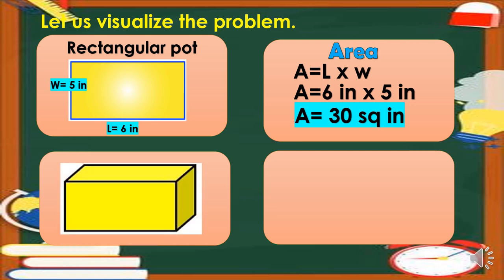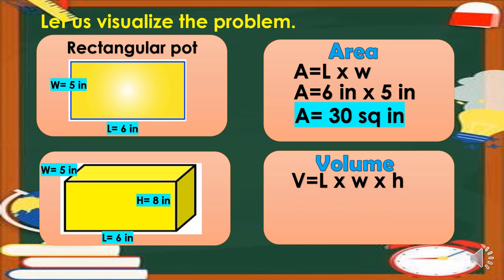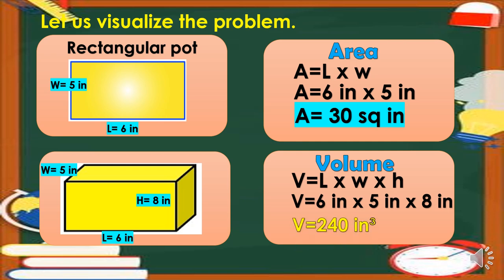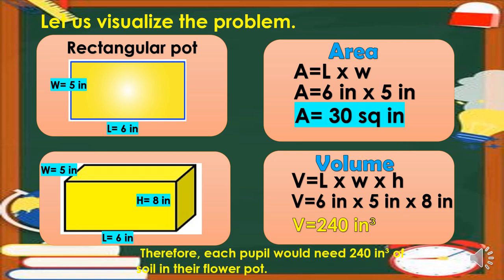Since we are filling the rectangular pot with soil, that means it now has three dimensions: the length of 6 inches, the width of 5 inches, and the height that the soil reaches, which is 8 inches. So we will now find the volume. Therefore, each pupil would need 240 cubic inches of soil in their flower pot.